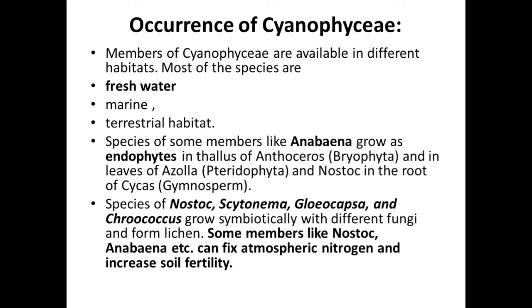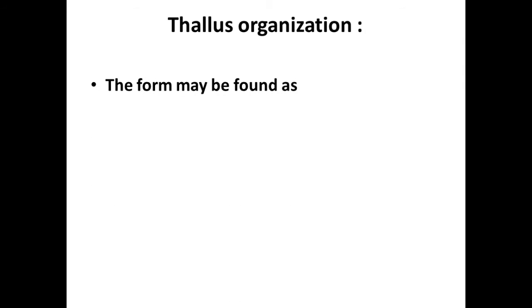We already discussed the ecology of blue-green algae in the last lecture. So that's all about its occurrence. Now the next point in our syllabus is thallus organization. In thallus organization, mainly three forms are found: first unicellular individuals, second non-filamentous colonial forms, and third filamentous form.